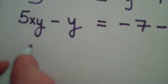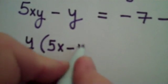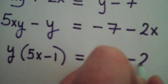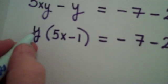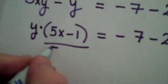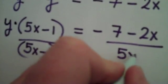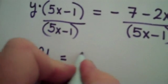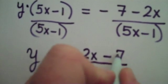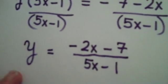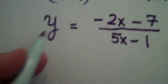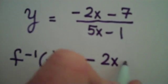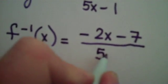The reason I get my y terms together is so that I can factor out a y. When I do that, I have y times the quantity 5x minus 1. That's equal to negative 7 minus 2x. And to finish, to get y alone, it's almost alone, but we need to finish by dividing both sides of the equation by the quantity 5x minus 1. And I have y is equal to the opposite of 2x minus 7. I'm going to write the bottom as 5x minus 1. This is already in lowest terms, and the only thing I'm going to do to finish, y is actually f inverse. So we're going to write that as f inverse of x is equal to the opposite of 2x minus 7, divided by the quantity 5x minus 1.